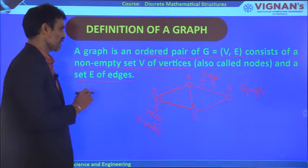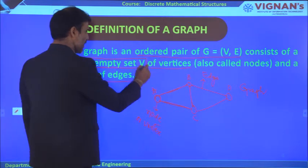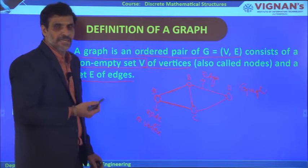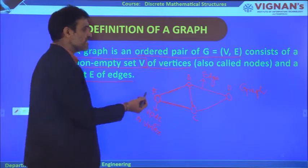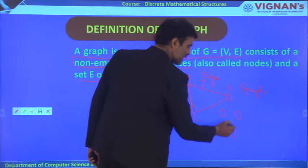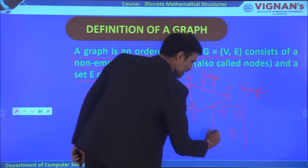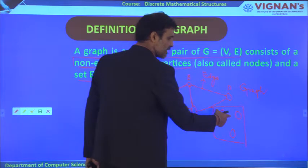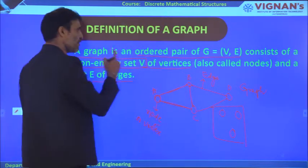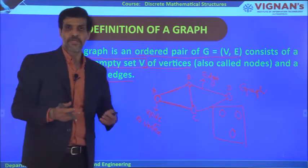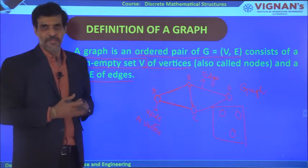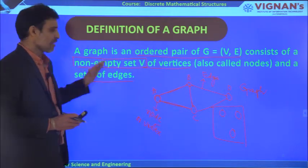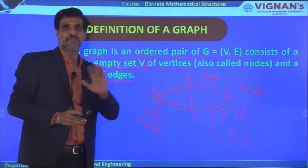A graph requires a non-empty set V because if there are no vertices, it is not possible to draw a graph. Even if there are no edges, we can still consider it a graph — a diagram with only vertices and no edges is still a graph. But if there are no vertices, it is not possible to represent anything as a graph. Therefore, a graph consists of a non-empty set of vertices and a set of edges — edges may be empty, but vertices may not.